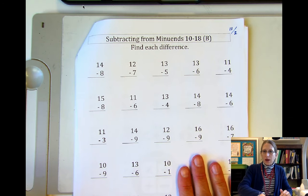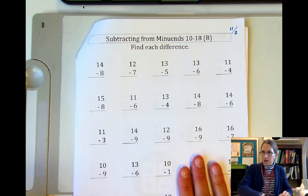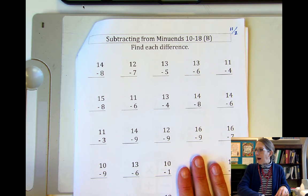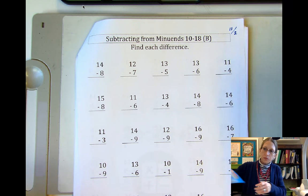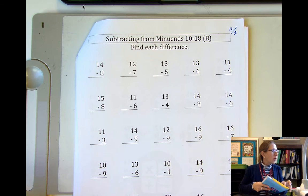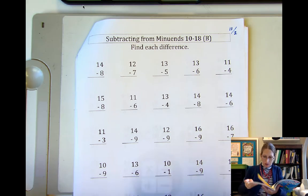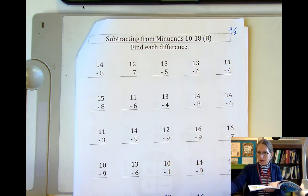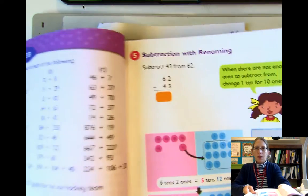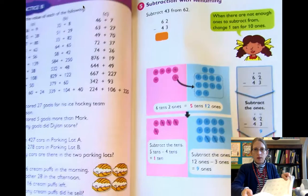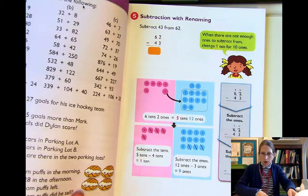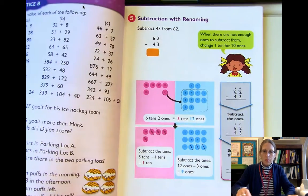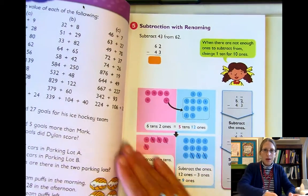All right, that is our fact practice for today. The next thing we are going to do is look at our textbook at page 47, where we are going to learn about subtraction with renaming.